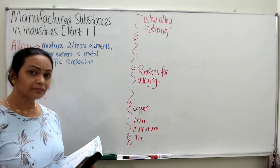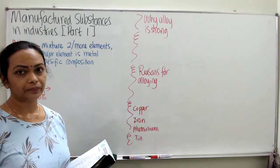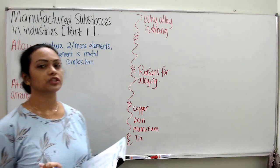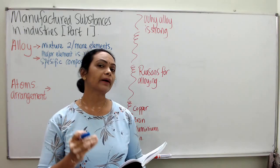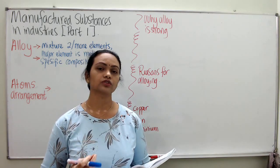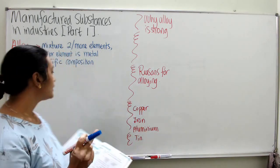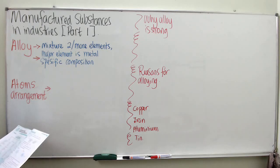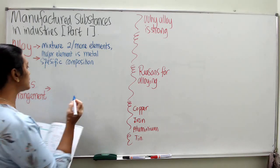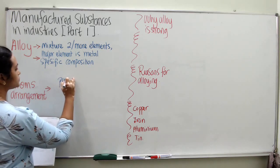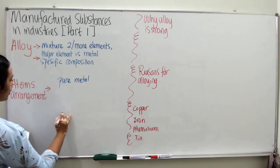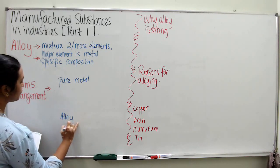Inside the alloy there might be some non-metals added, but it must be in specific composition depending on the need and uses of the alloy. Now let's look at atom arrangement — how do atoms in pure metal look, and how do atoms in alloy look? This is very important because it comes up a lot in short answer questions.